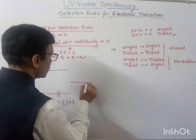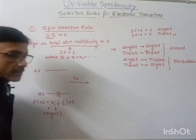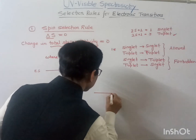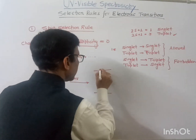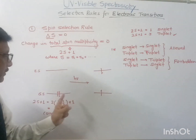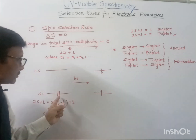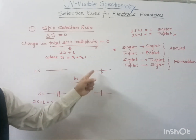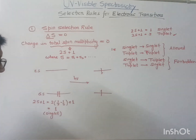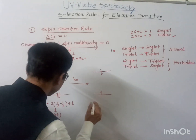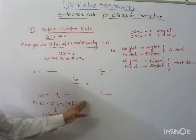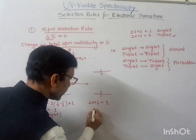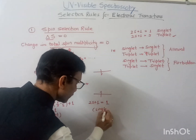After absorbing UV light, one electron may go to the excited state. When the transition takes place, the spin remains the same — there is no flipping of spin. The electrons remain in opposite spin in the excited state as well. So 2S plus 1 still equals 1, and this excited state is also a singlet. This is a singlet-to-singlet allowed transition.